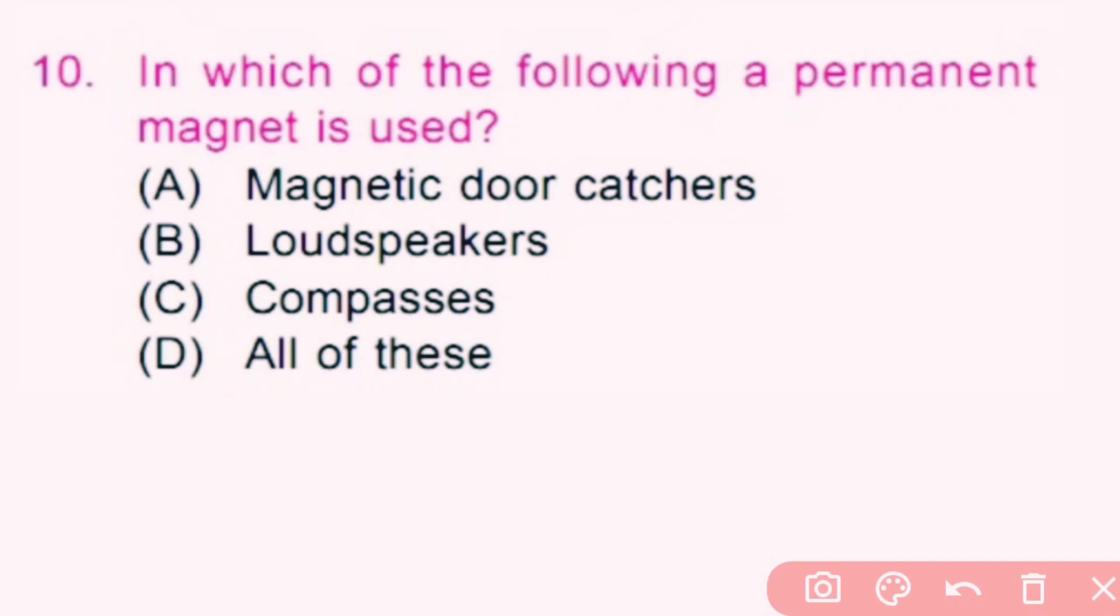Question number 10. In which of the following is a permanent magnet used? Option A, magnetic door catchers. Option B, loudspeakers. Option C, compasses. Option D, all of these. Here, all the given options use permanent magnets, so D is the correct answer.